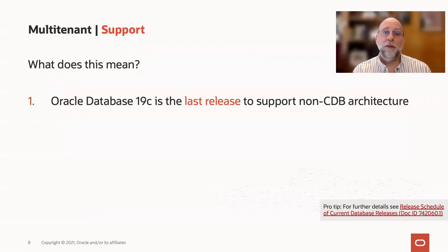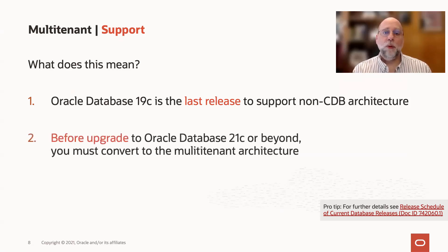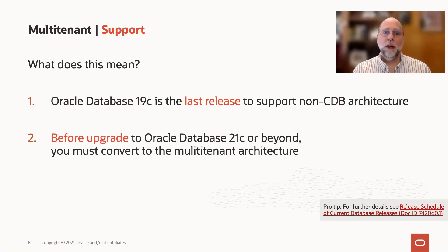So what does that mean for you right now? If you're going to 19C, be aware that 19C does support the non-CDB architecture, but it is the last release that will support non-CDBs. This means that when you migrate to 21C, you won't be upgrading a non-CDB and then converting it — you're going to have to convert to the multi-tenant architecture before you get to 21. There are various ways to do that, and that's what we're going to talk about today.